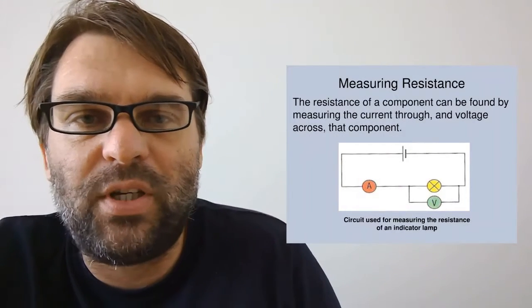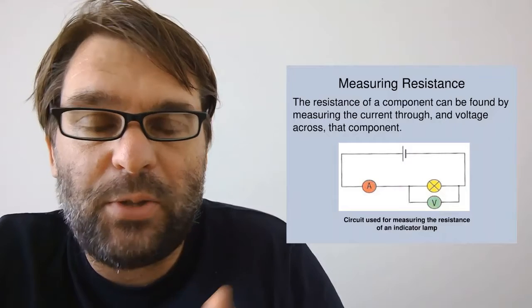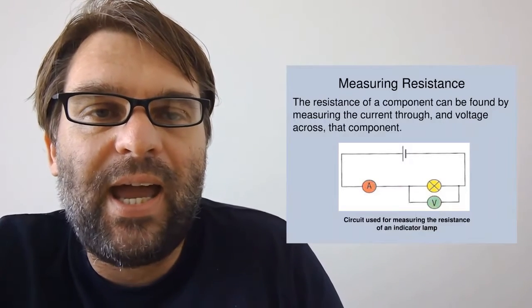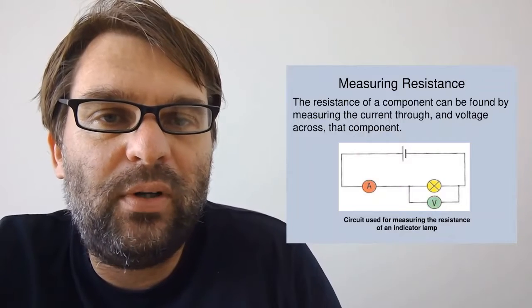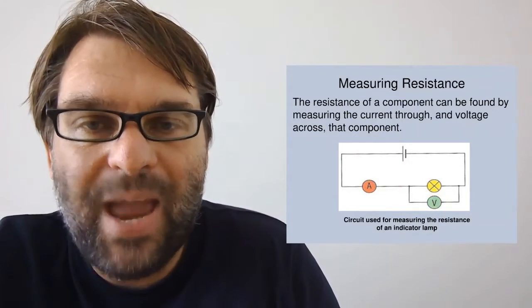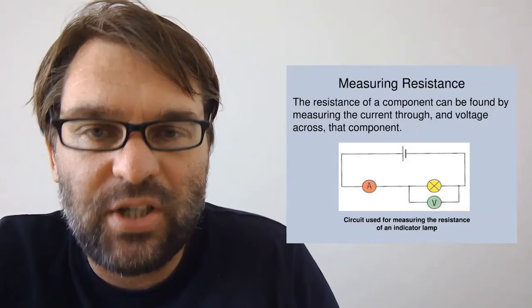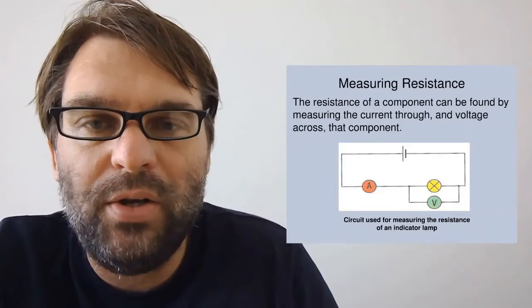So how do you measure resistance? The resistance of any component - in this particular case a bulb - can be found by measuring the current through and the voltage across the component. Ammeters are always in series and voltmeters are always in parallel across the component.